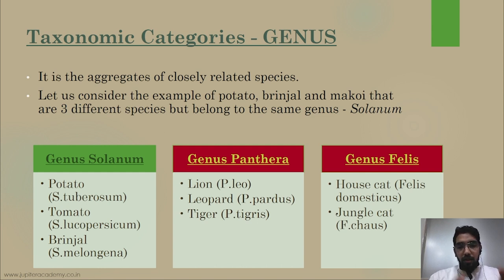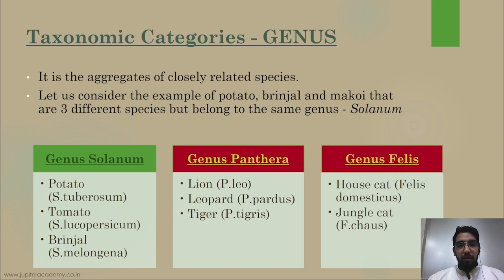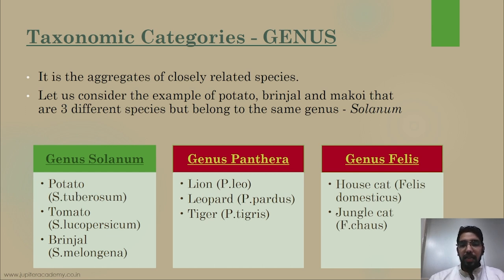Similarly, genus Panthera includes big wild cats — that is why lion, leopard, tiger, and so on are placed under genus Panthera. And genus Felis includes small cats — domesticated or small cats — such as Felis domesticus and Felis silvestris, which come under this genus.